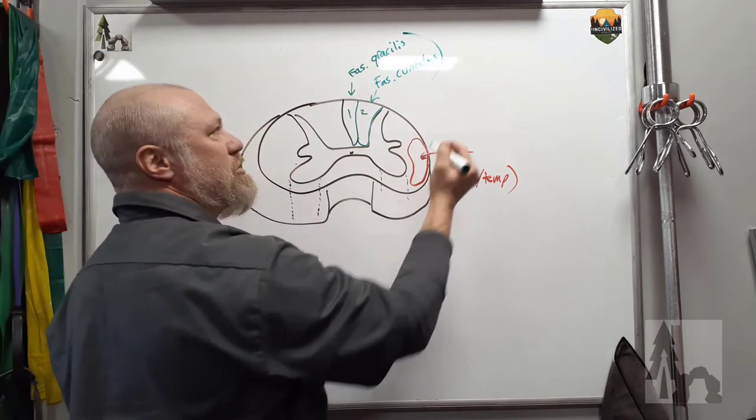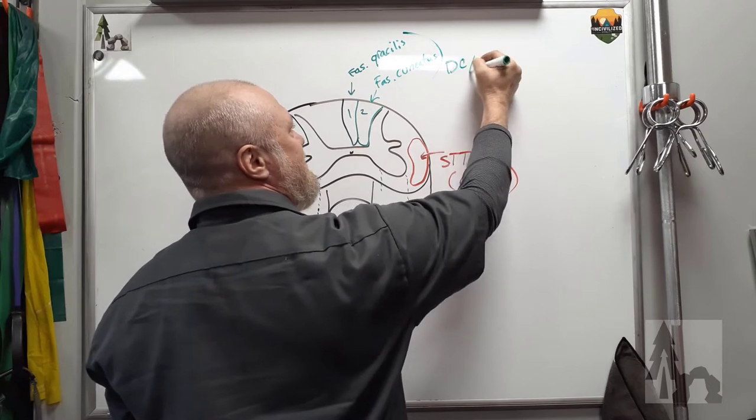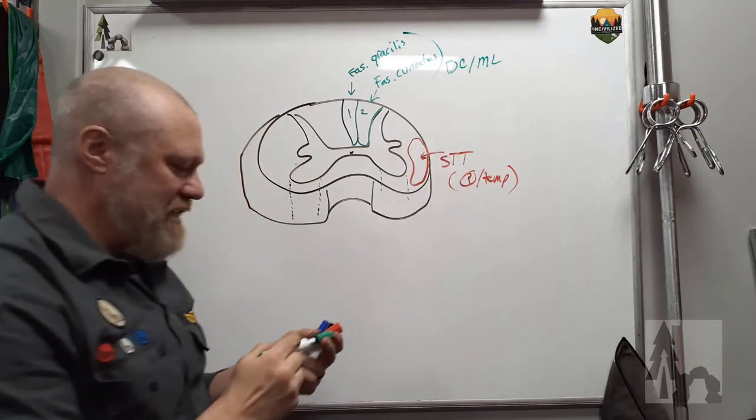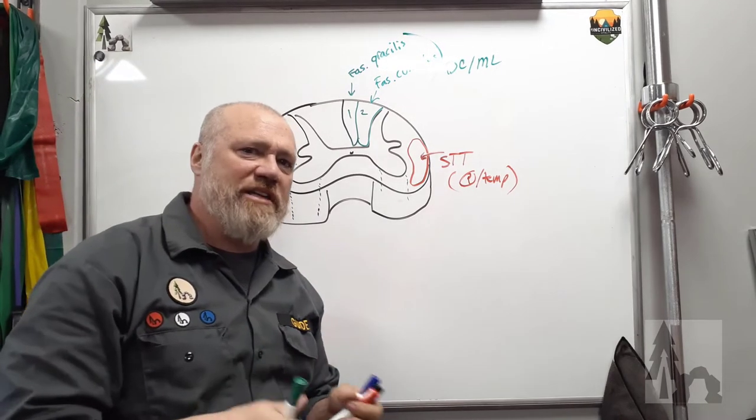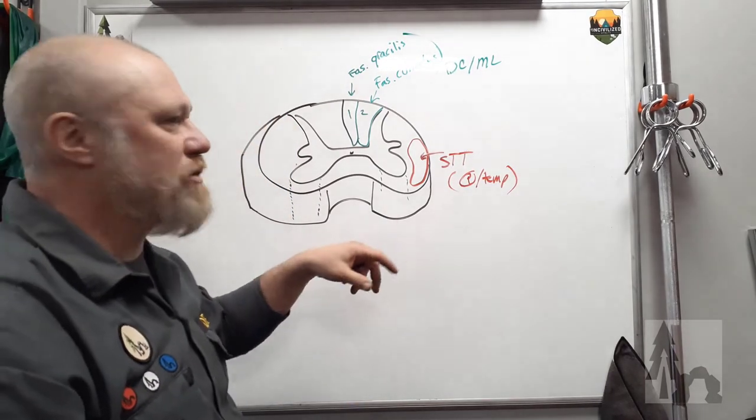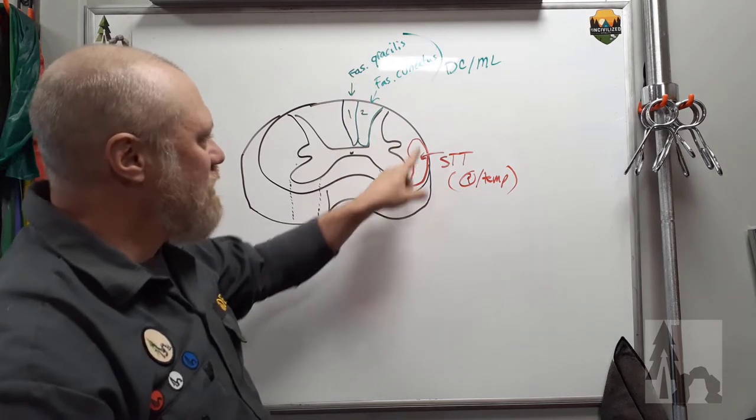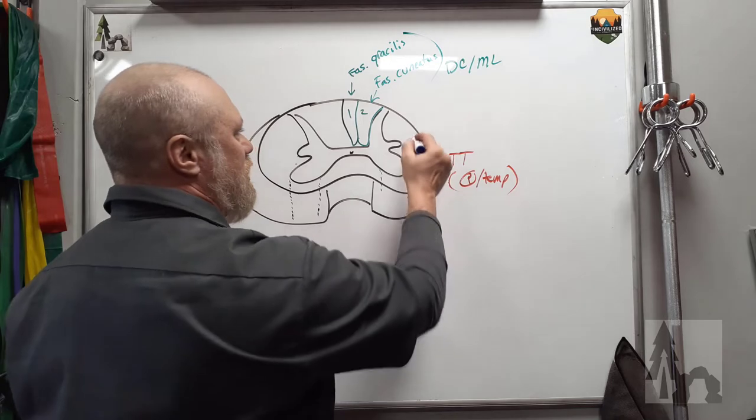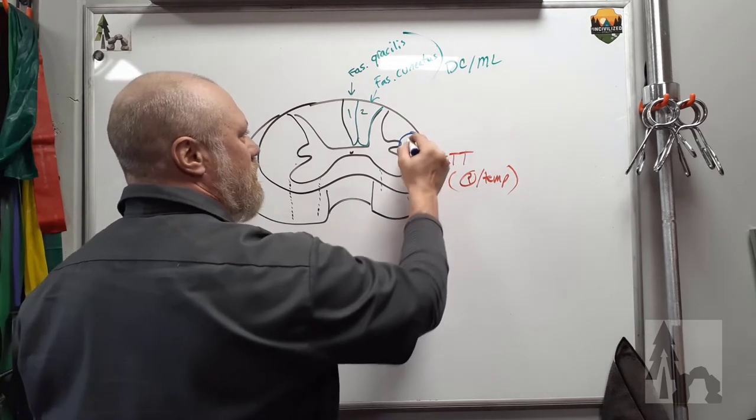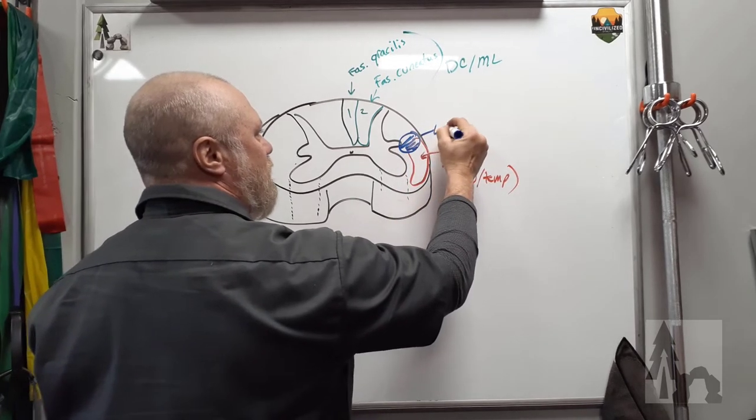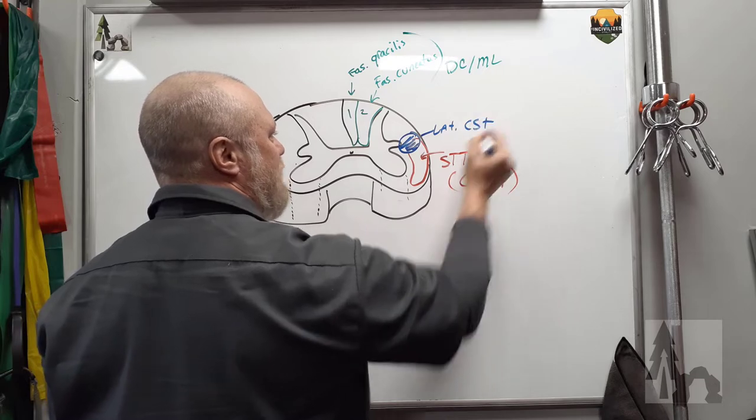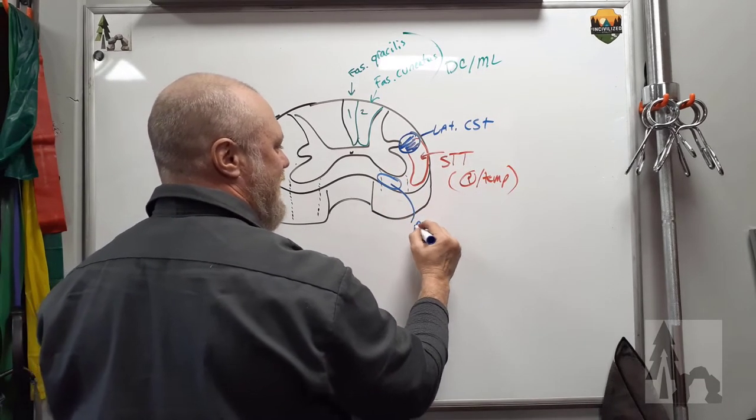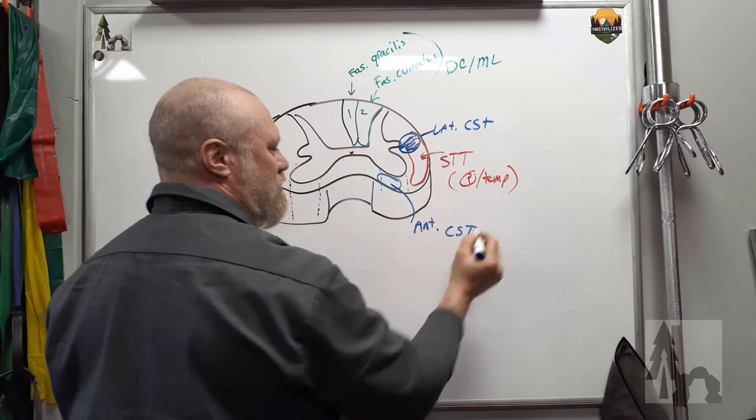And just as a matter of fact here, the fasciculus gracilis and cuneatus are known collectively as the DCML, dorsal column medial lemniscus. The medial lemniscus portion is brainstem. We'll get to that in a different video when we do ascending long tracts. But that takes up a big chunk of white matter on the lateral column. Another big chunk of white matter is taken up with the lateral corticospinal tract and then another little piece down here in the anterior portion called the anterior corticospinal tract.